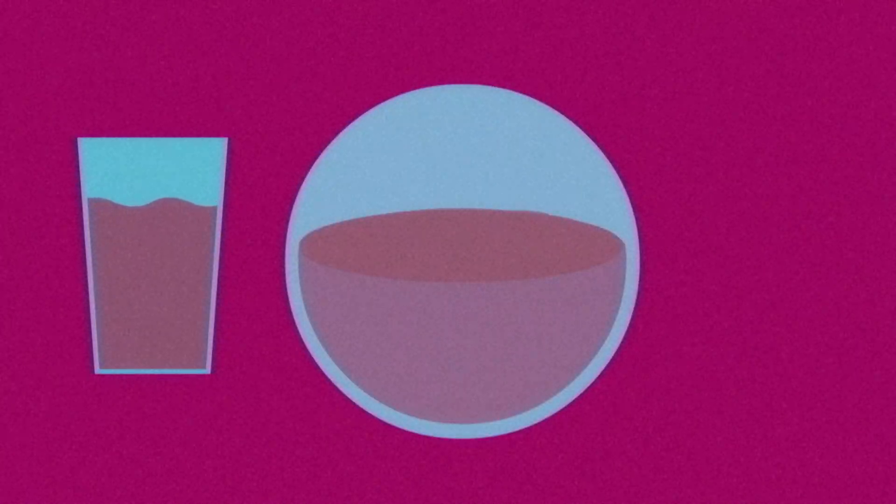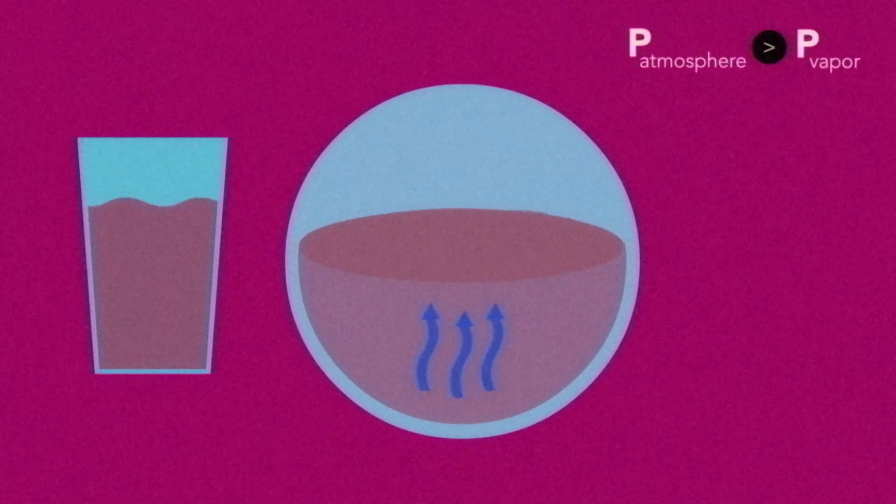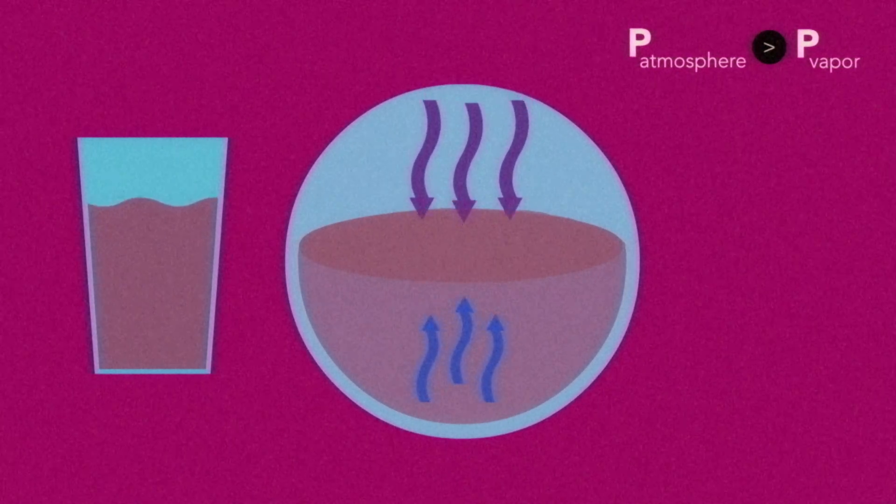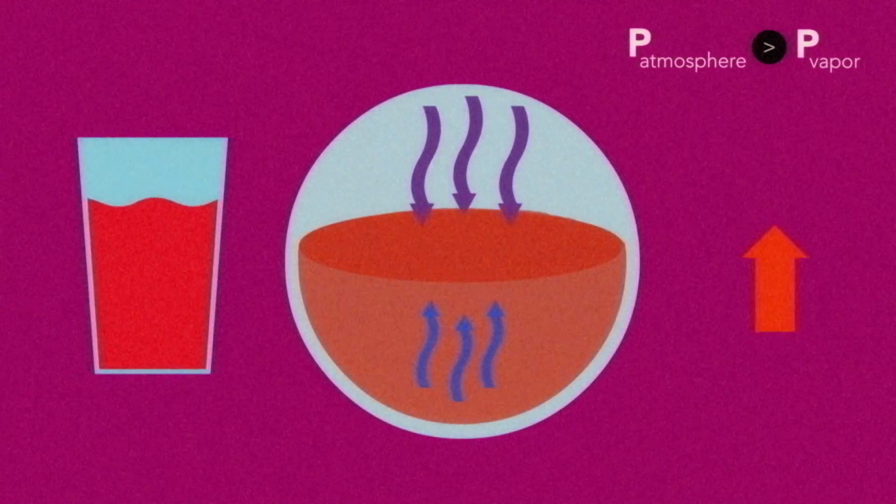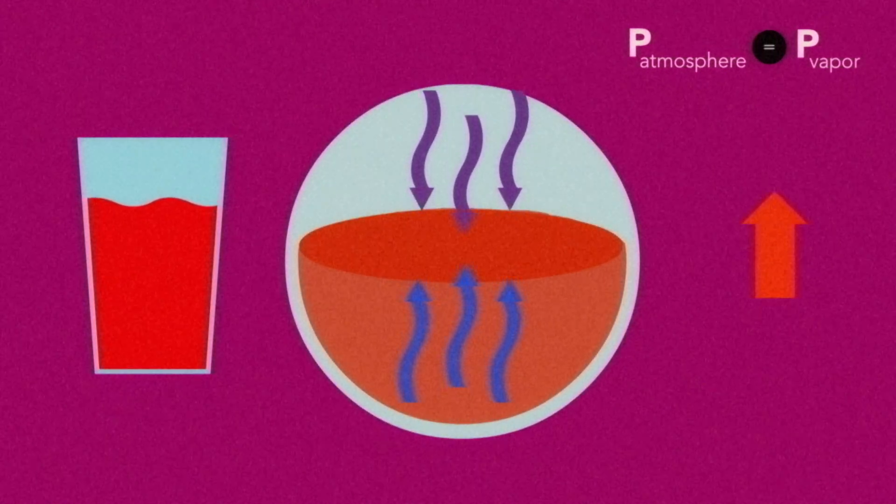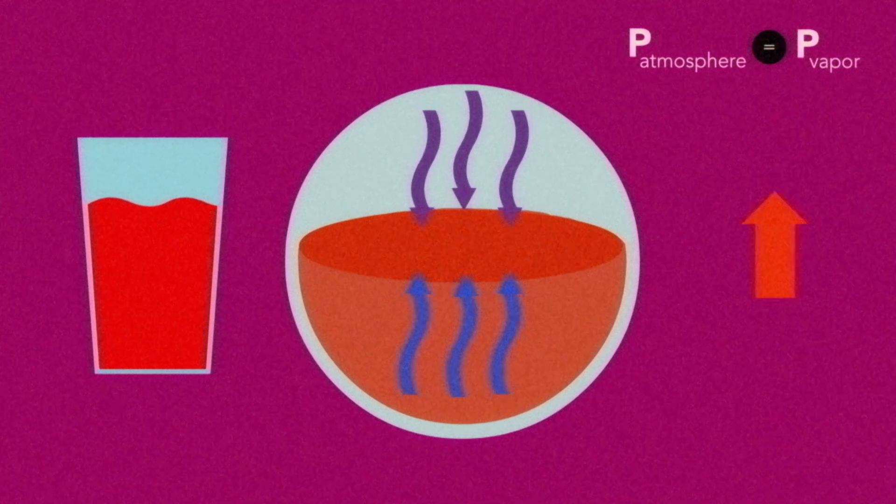As for the boiling point, when a liquid boils, it produces bubbles filled with its vapor. But for a bubble to form, the vapor pressure must become as strong as the atmosphere constantly pushing down on the surface of the liquid. As the liquid is heated, the vapor pressure increases, and when it becomes equal to the atmospheric pressure, the bubbles form and boiling occurs.